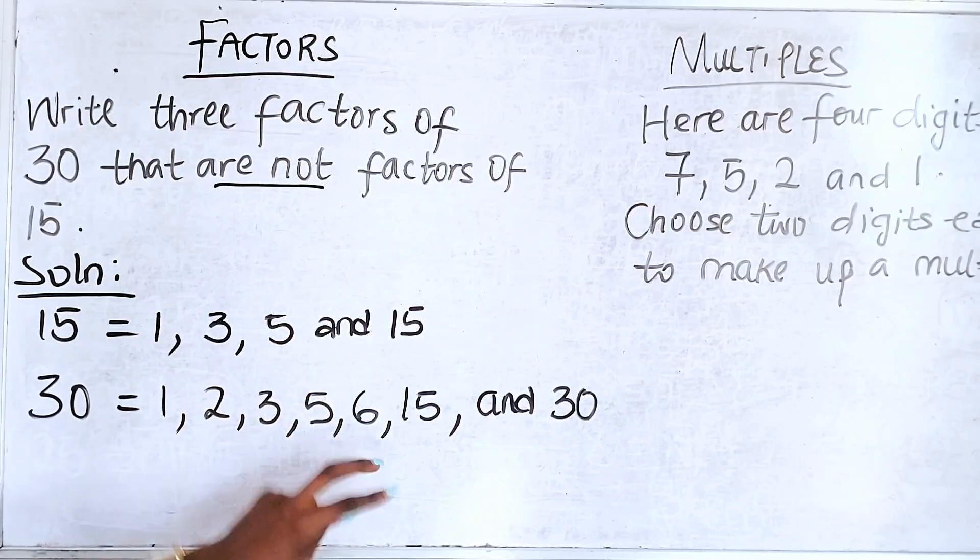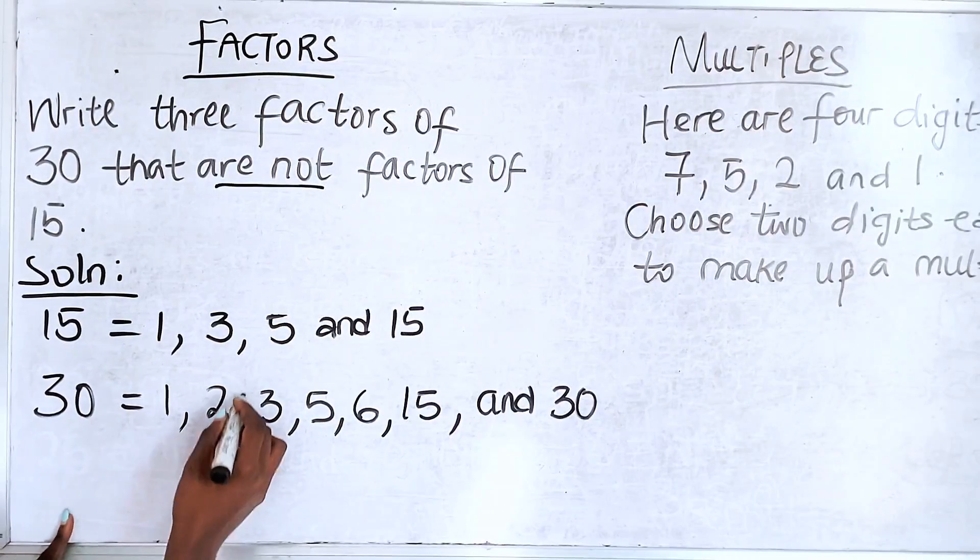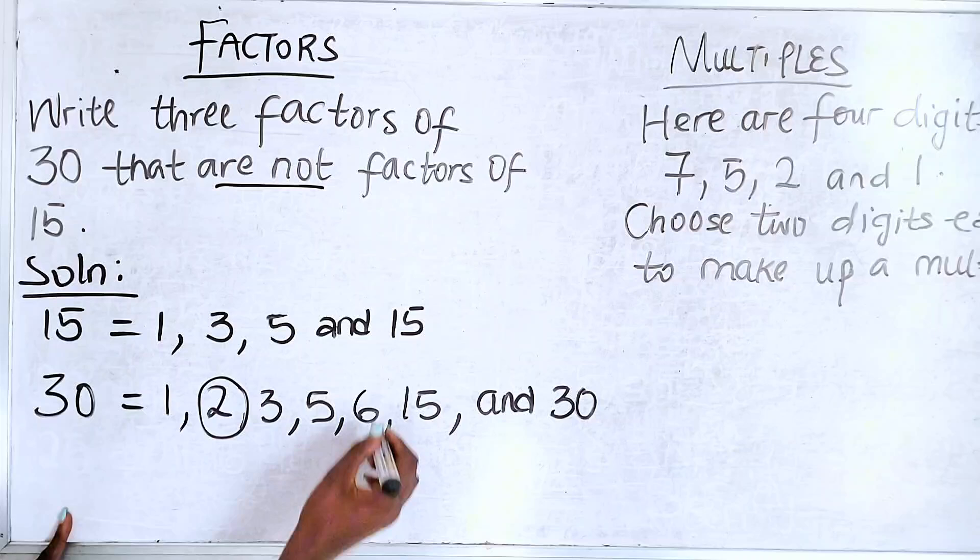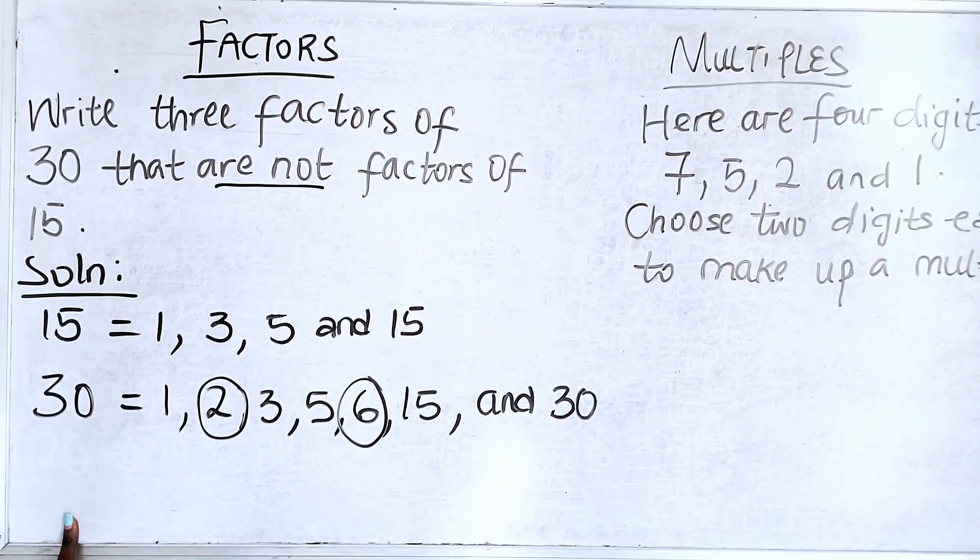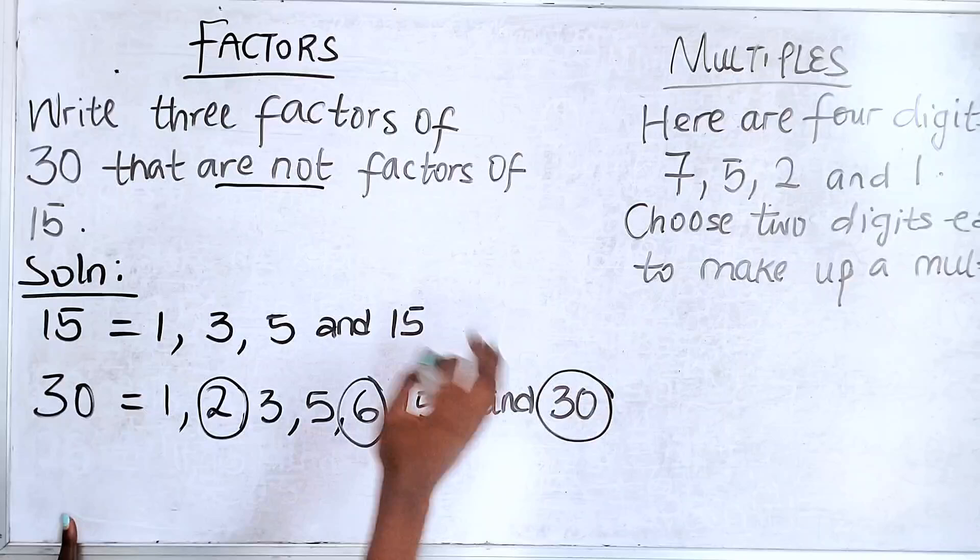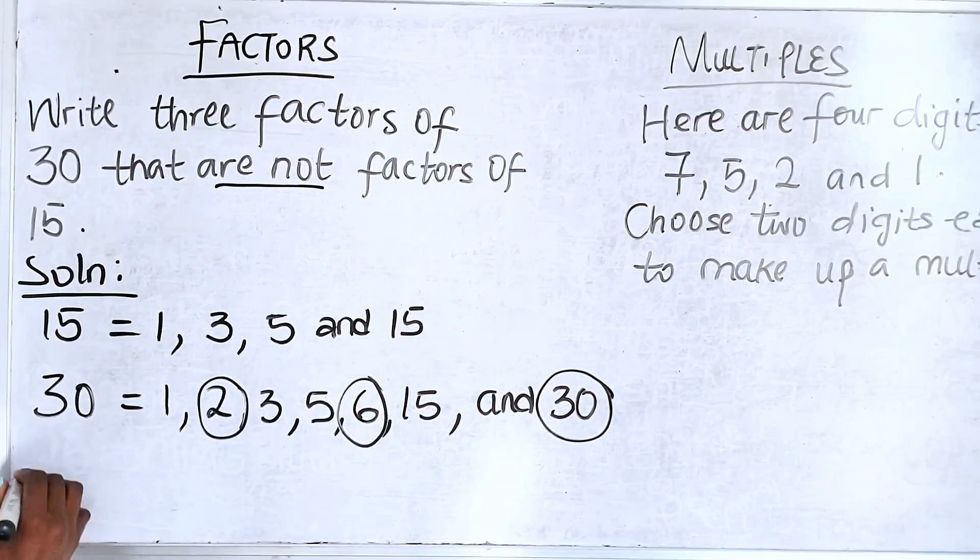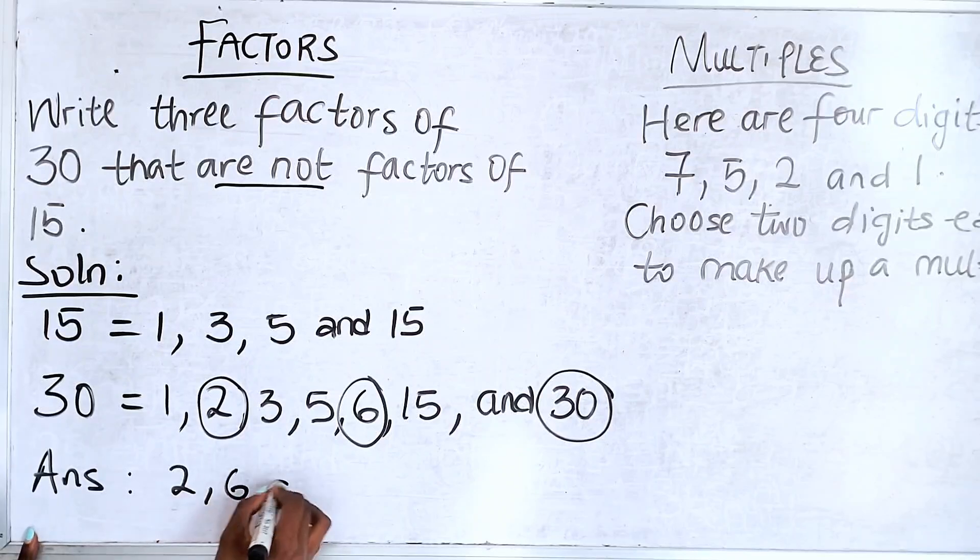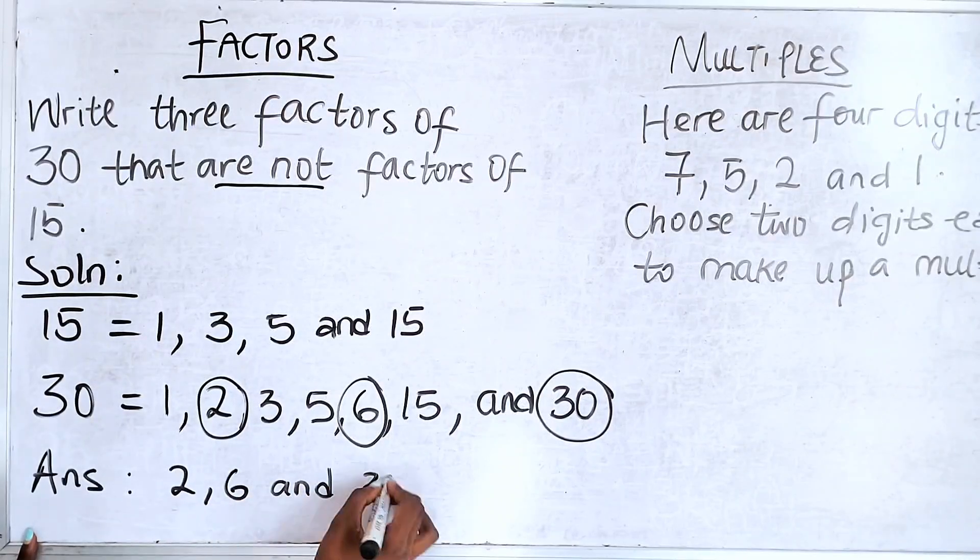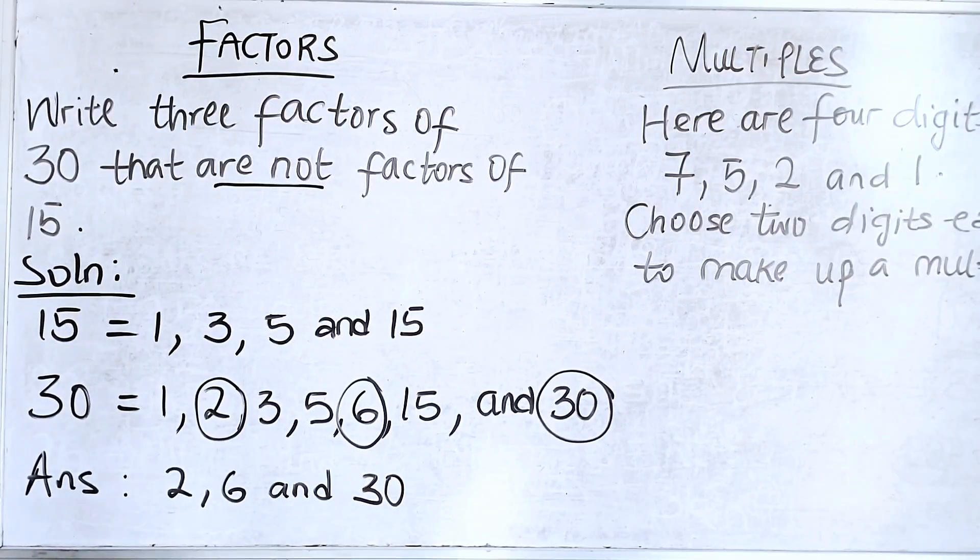So the question says that write 3 factors of 30 that are not 15. So what are the values here that we can't find here? We can find 2 here. We can find 6 here. What else? And we can find 30 here. So your answer is 2, 6 and 30. I hope we are together on that one.